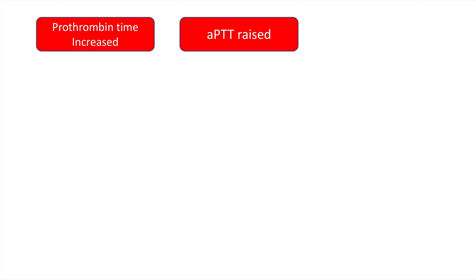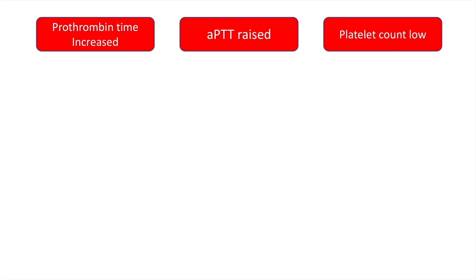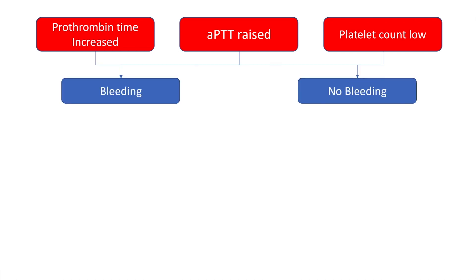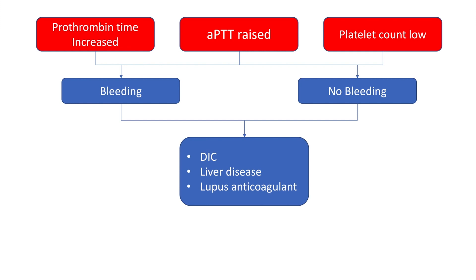Another scenario is where the prothrombin time is increased, the APTT is deranged, and the platelet count is also low. This is a relatively ominous condition, and whether or not the patient is bleeding, the cause is either disseminated intravascular coagulation, liver disease, or lupus anticoagulant. With that we have come to the end of this video on the approach to a case of bleeding disorders. Thanks for watching and we will see you in the next video.